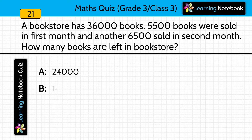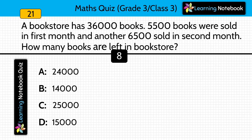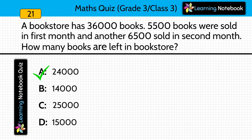Question twenty: a bookstore has 36,000 books. 5,500 books were sold in the first month and another 6,500 were sold in the second month. How many books are left? Answer is 24,000 books. First add total books sold: 5,500 plus 6,500 equals 12,000. Then subtract 12,000 from 36,000 to get 24,000.